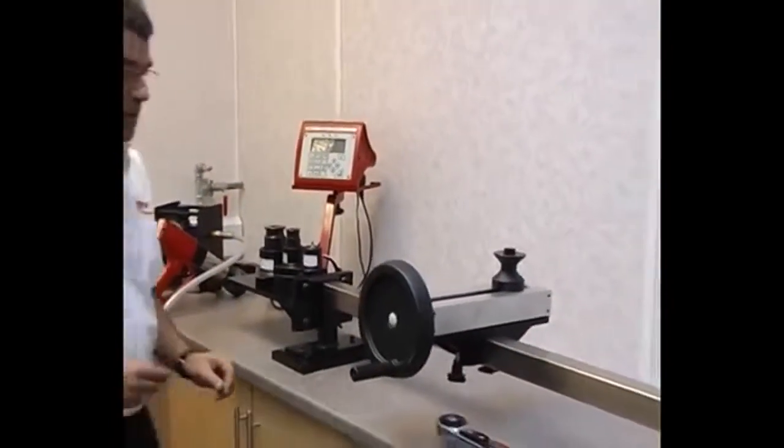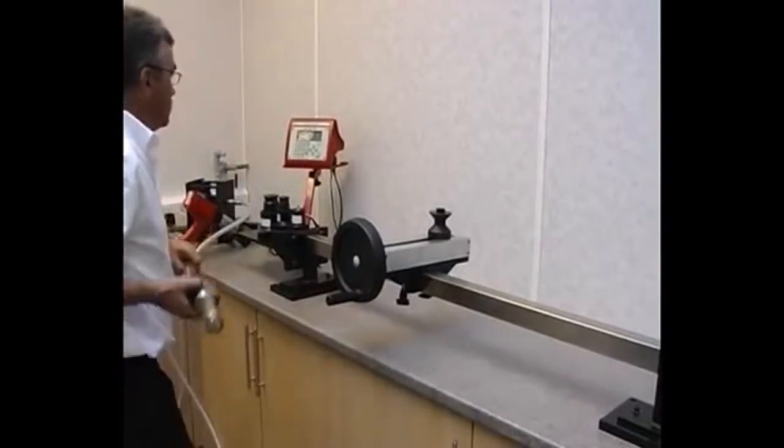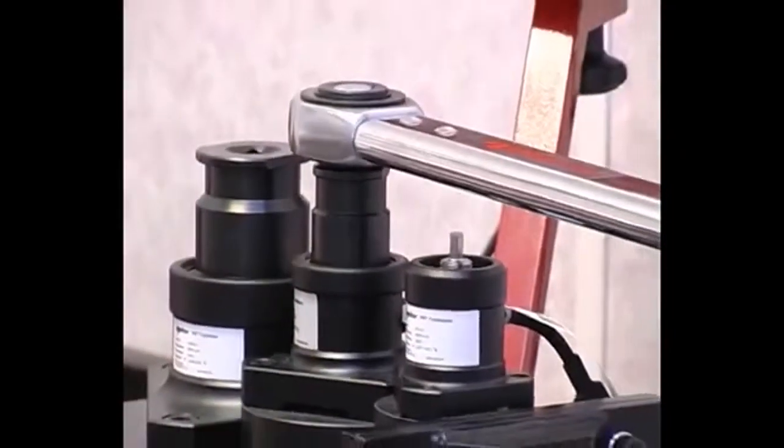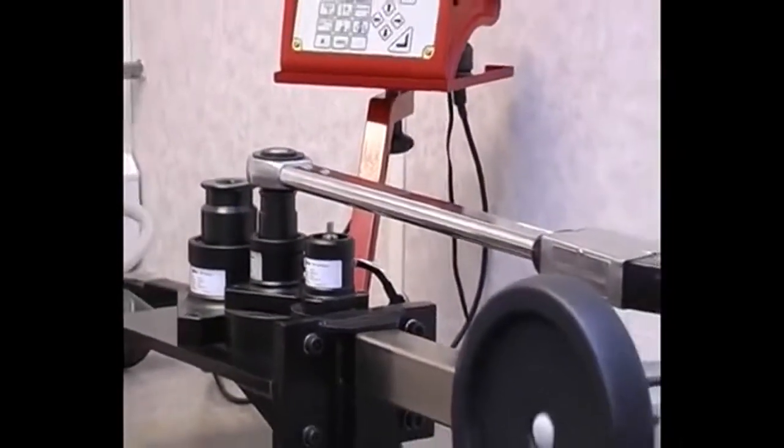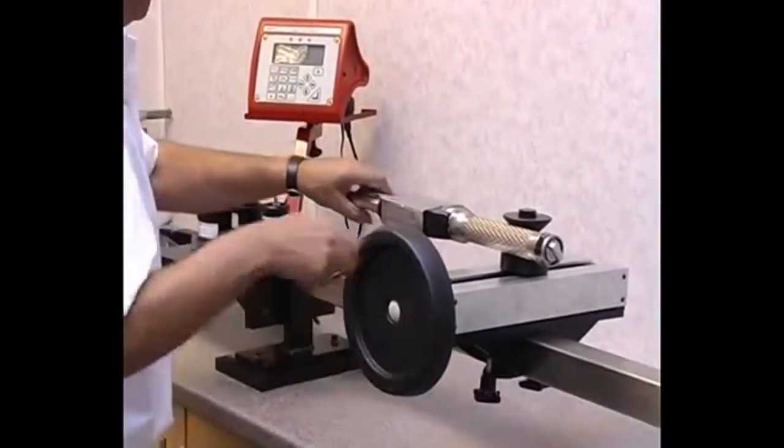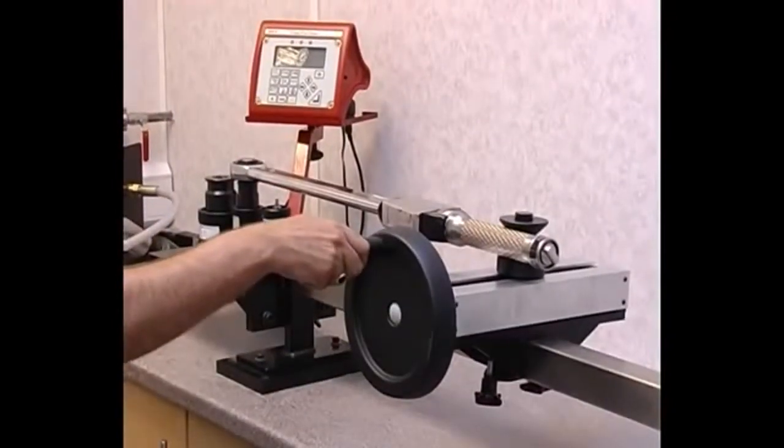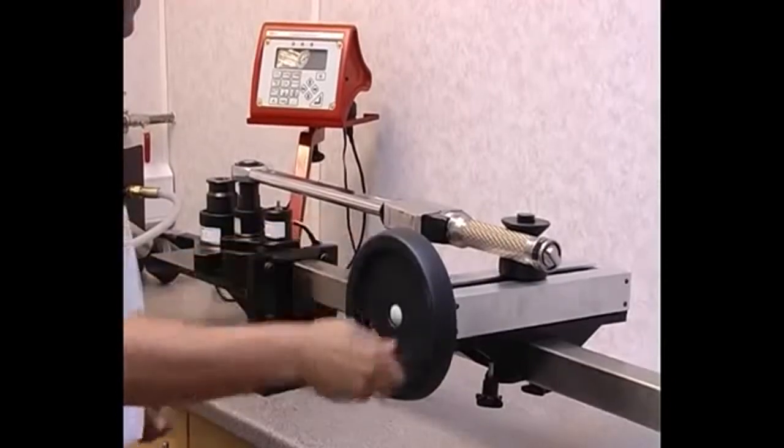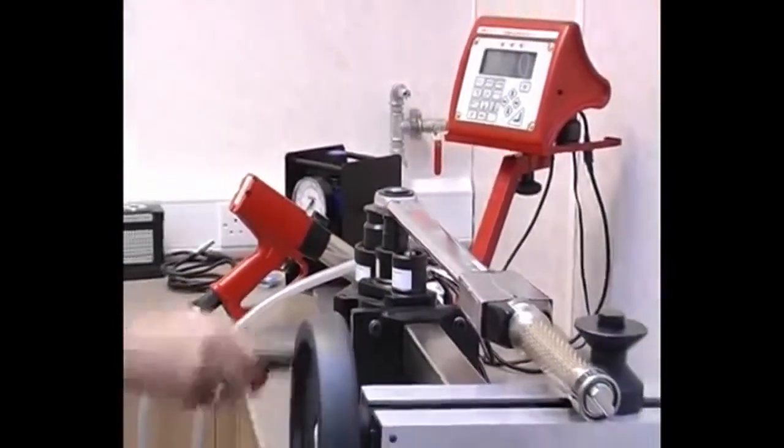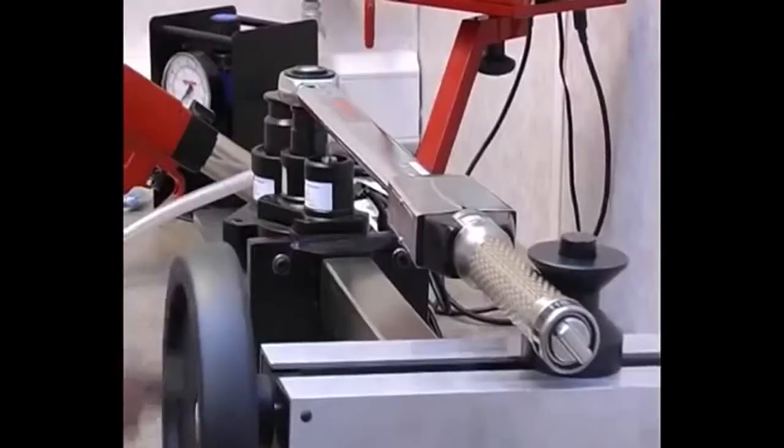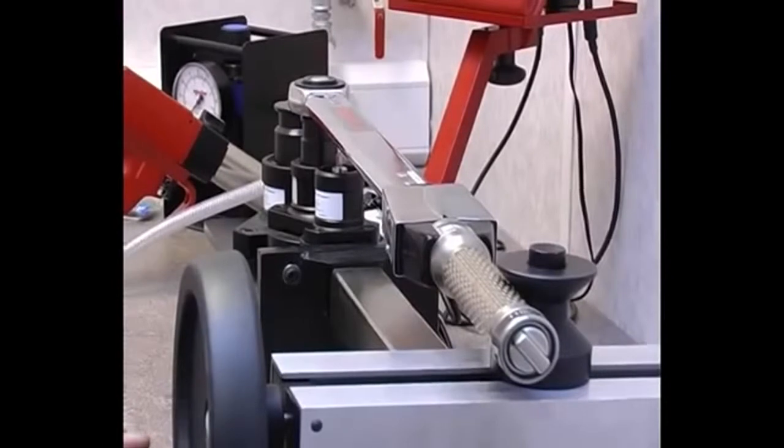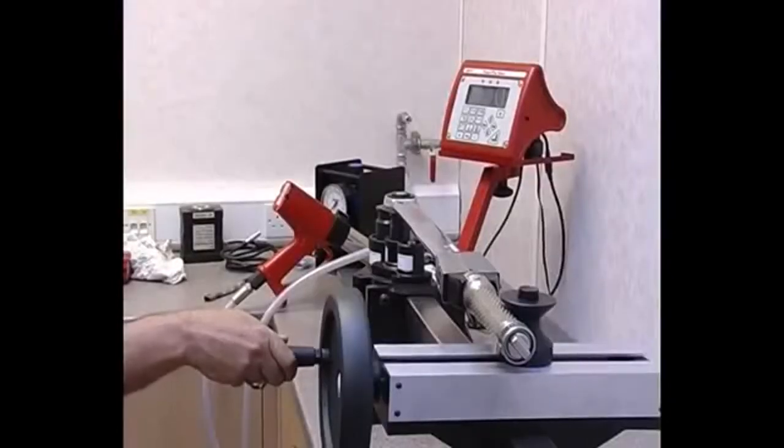The TWL1500 is an accurate and cost effective loading rig for calibrating torque wrenches between 1 and 1500 Nm. Large torque wrenches can be operated effortlessly by simply winding the handle, while the TTT captures the first peak of torque in the case of click type torque wrenches.